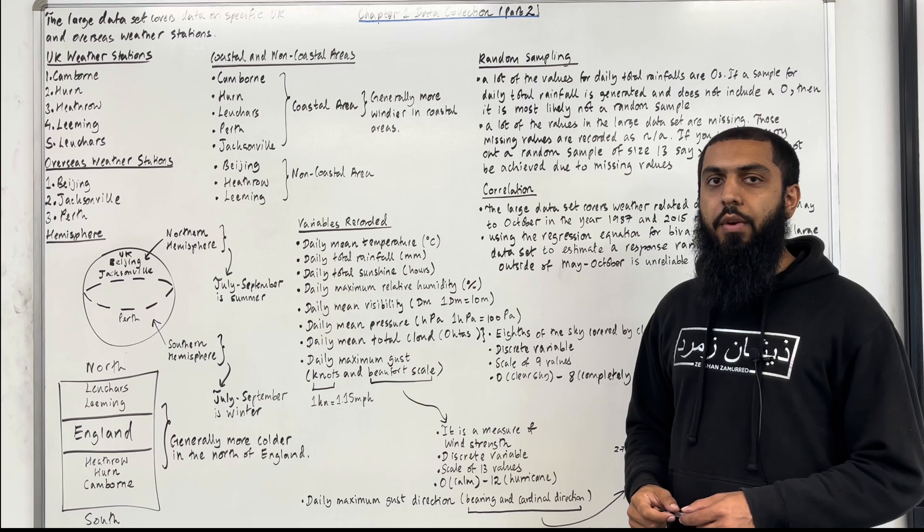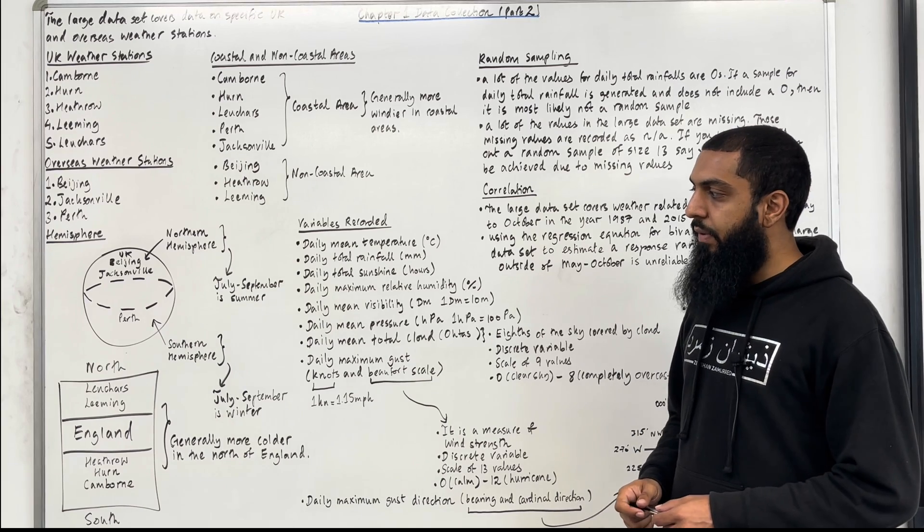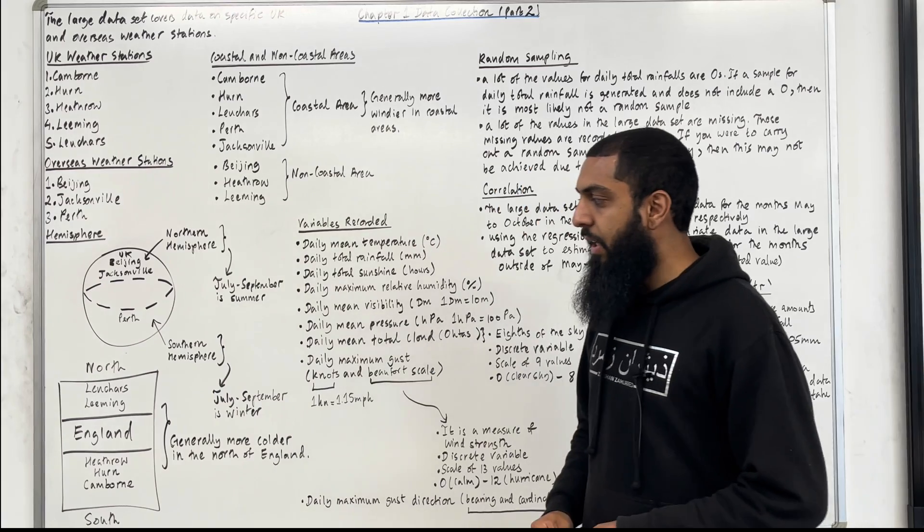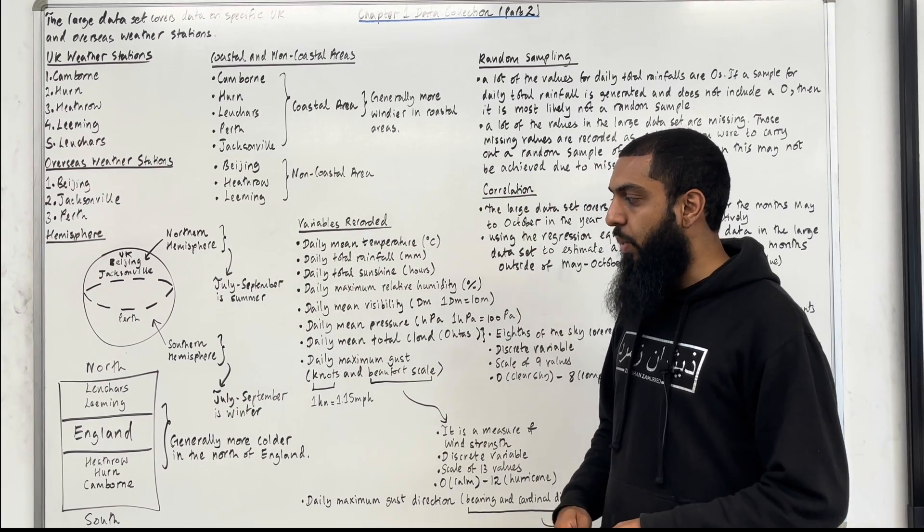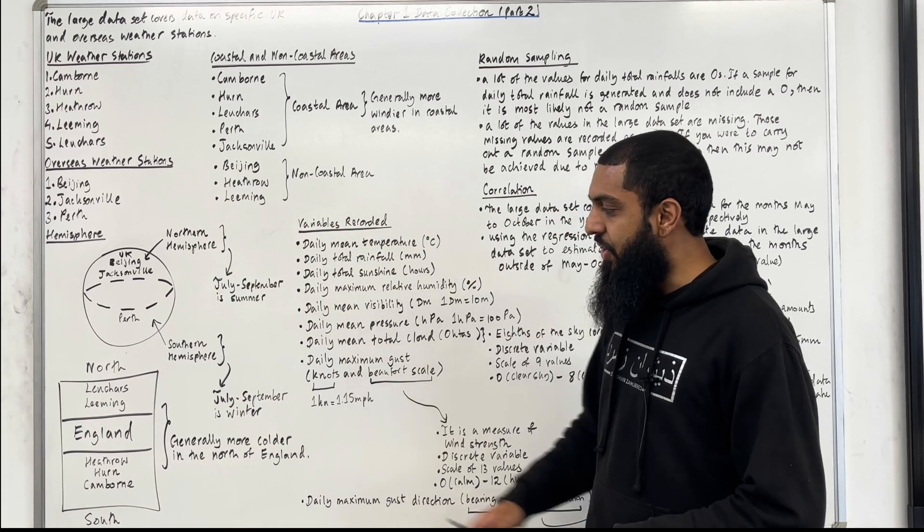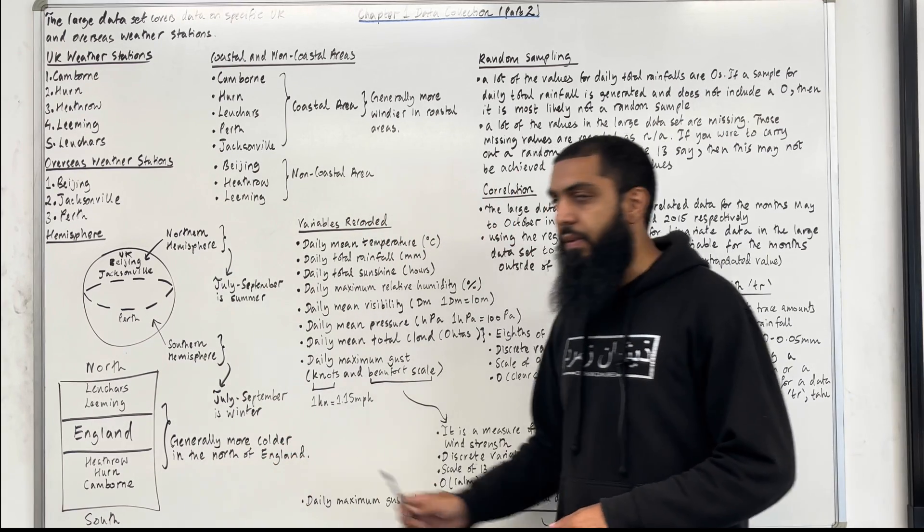Let's have a look at the North and South of England. In the North of England we have Leuchars and Leeming. Whereas in the South of England we have Heathrow, Herne and Camborne. It is generally more cold in the North of England.